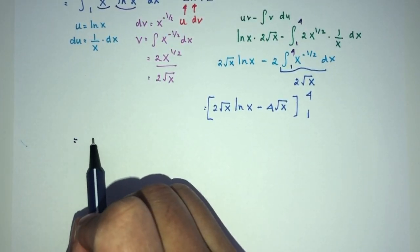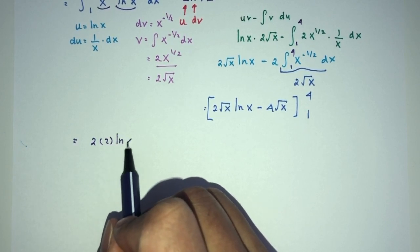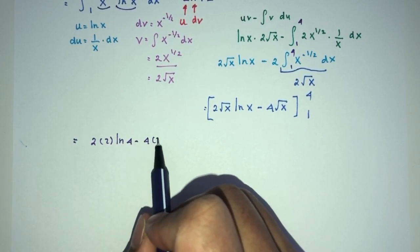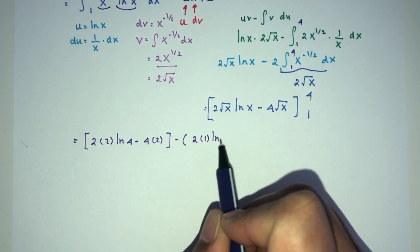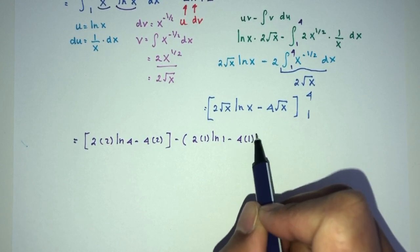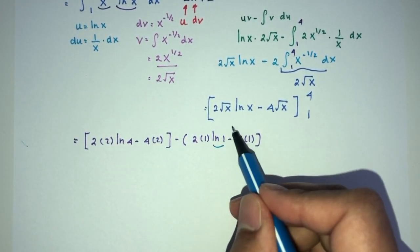You will have 2. Root of 4 will be 2. ln of 4 minus 4 times 2. Minus 2 times 1. ln of 1 minus 4 times 1. This will cancel out because ln of 1 is 0. This will cancel out.